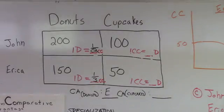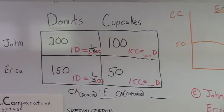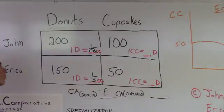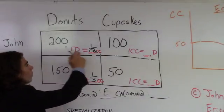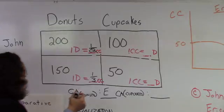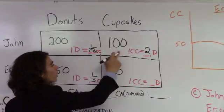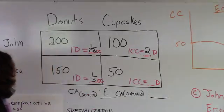However, because before we go on to question C, could you explain the same thing on cupcakes? Yeah, for cupcakes, we'll do the same thing. We'll use over-under, and we'll put, for John, 200 over 100 for cupcakes. And that means one cupcake, he's going to have to give up two, because 200 over 100 donuts.